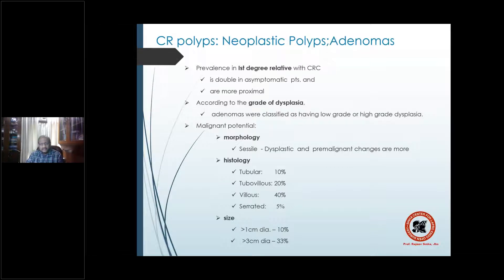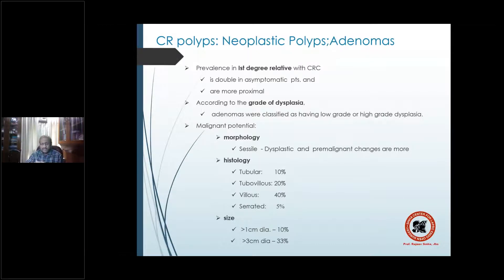Regarding adenomas further: first-degree relatives of affected patients are at double the risk of having the same disease, often without symptoms. These relatives would tend to have polyps more proximally — ascending colon, descending colon, transverse colon, or even small bowel. According to grade of dysplasia, classify as low grade or high grade: less than 20%, 20–80%, or more than 80% villous, or serrated.